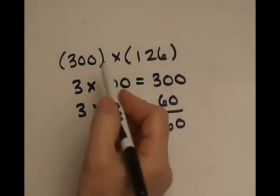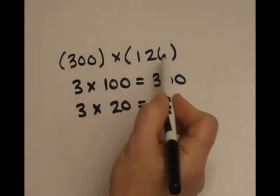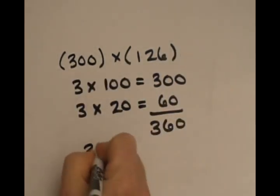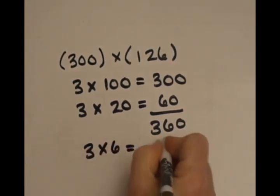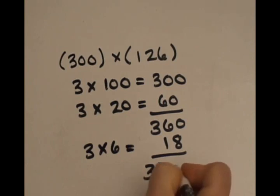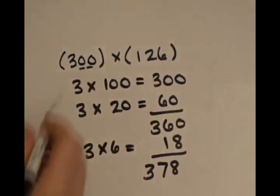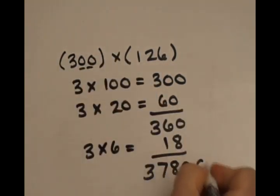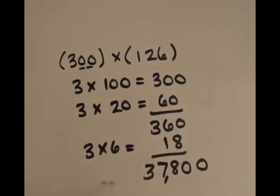And then I'm going to continue. I'm going to multiply the 3 times the 6. That gives me 18. Add the result together, 378. Don't forget, it's 300, not just 3. So you're going to have to add two 0's to the end. My result is 37,800. That's how you want to practice multiplying from left to right. It's much easier in your head.